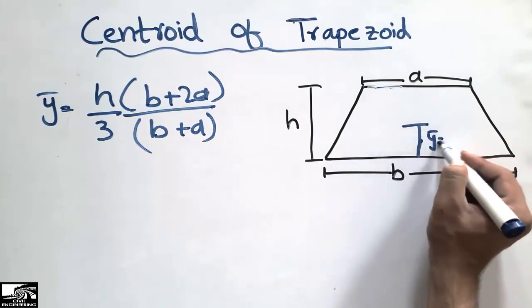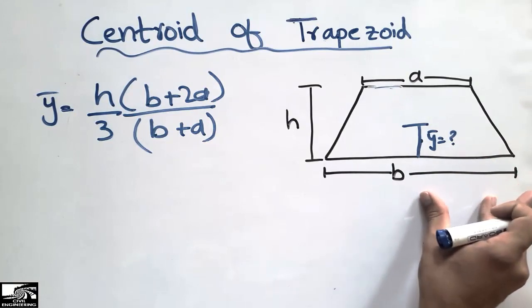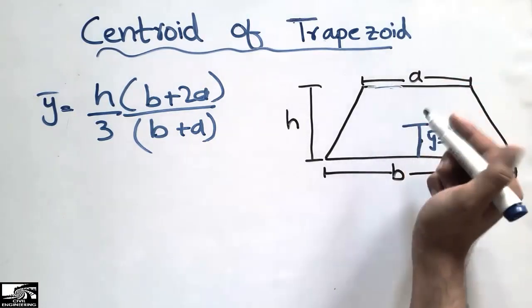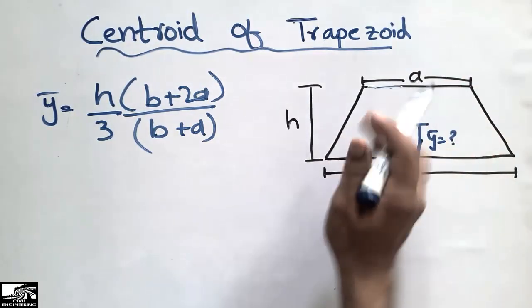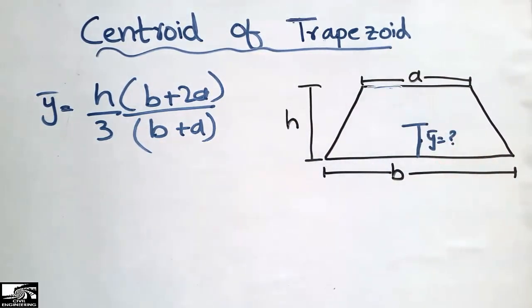These are the variables: b is the bottom length, a is the upper length, and h is the height of the trapezoid.